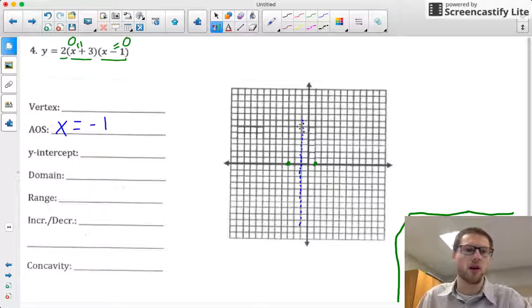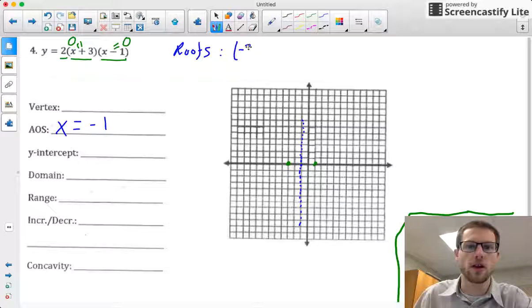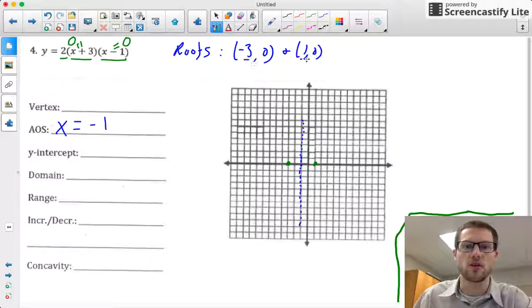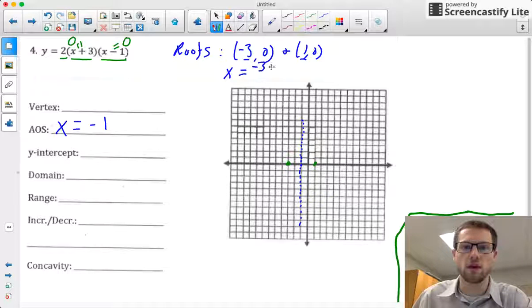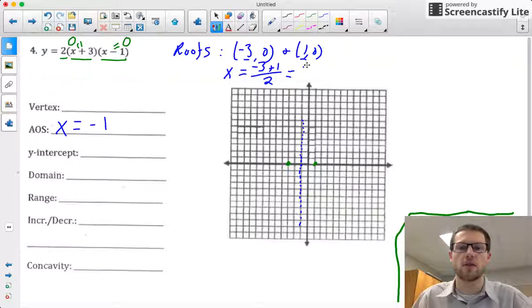Or I could algebraically figure that out too. If my roots are (-3, 0) and (1, 0), I could take the average between these two numbers. So the x will be given as (-3 + 1), and take the average of those two numbers, so I need to divide by 2. That's going to equal -2/2, which also gets me -1.